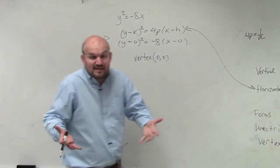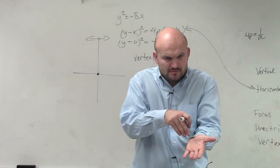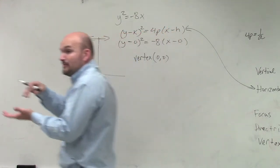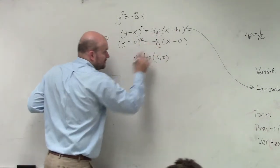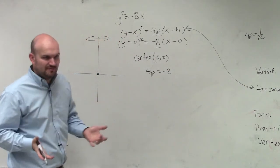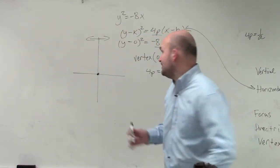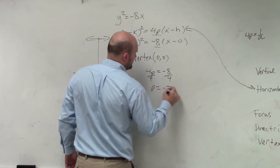So we need to figure out what p is. p is the distance from your vertex to your focus. So 4p is equal to negative 8. 4p is equal to negative 8. They're in the same position of our formulas. Let's figure out what p is. Divide by 4, divide by 4, p is equal to negative 2.